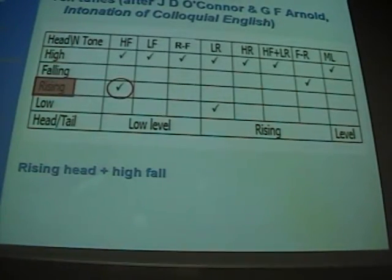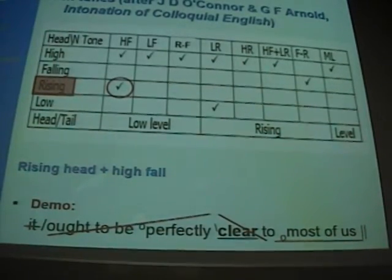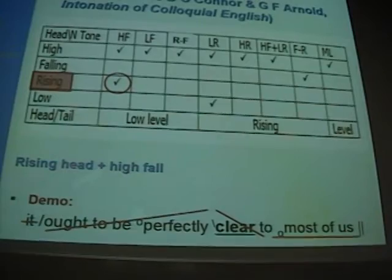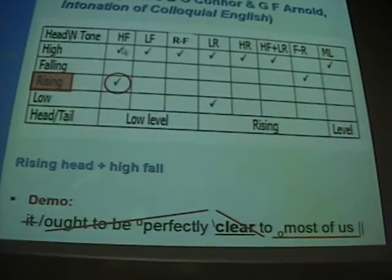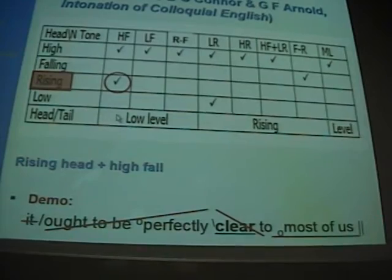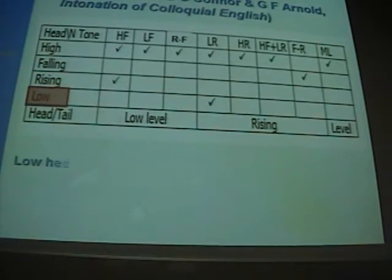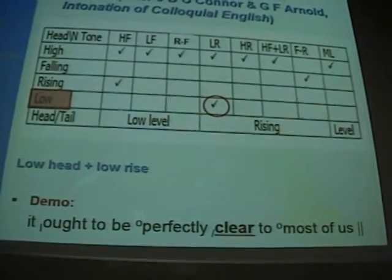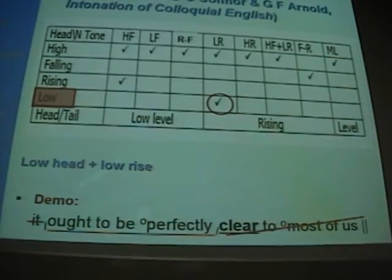The rising head is associated principally with the high fall: 'It ought to be perfectly clear to most of us' — like climbing up a diving board and then taking straight off. That gives you a choice between high head and the more exciting rising head. Finally, the low head goes with the low rise — we already know it sounds grumpy: 'It ought to be perfectly clear to most of us.' And that's the ten tunes.